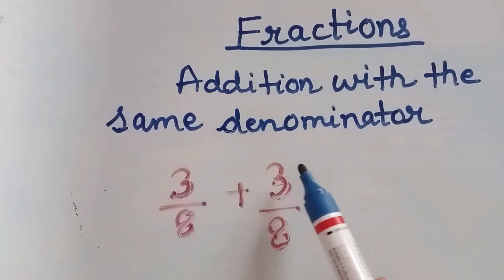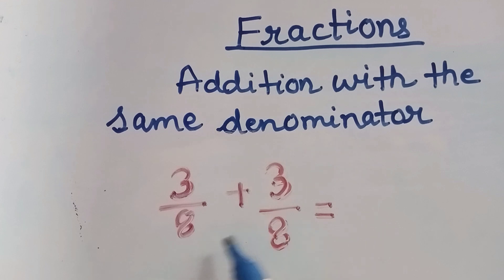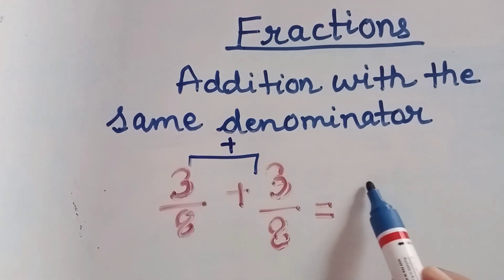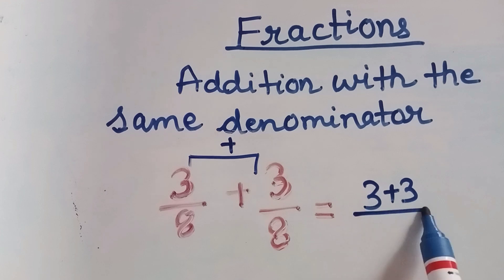Let us take another example. We have 3 by 8 plus 3 by 8. Here the denominator is same, so we will add these two numerators. We will add 3 plus 3, and in the denominator we have got 8. So here it is 3 plus 3 is 6 divided by 8.